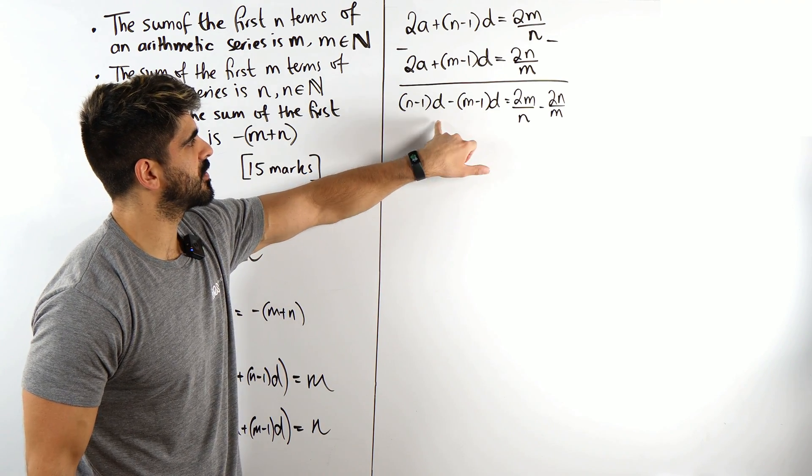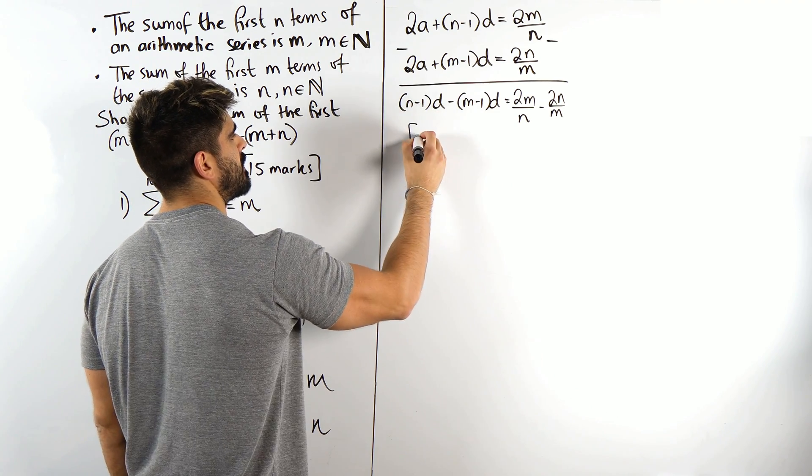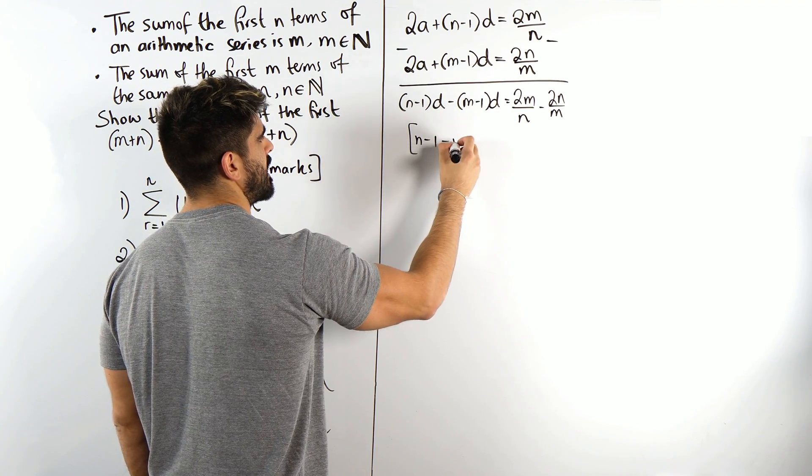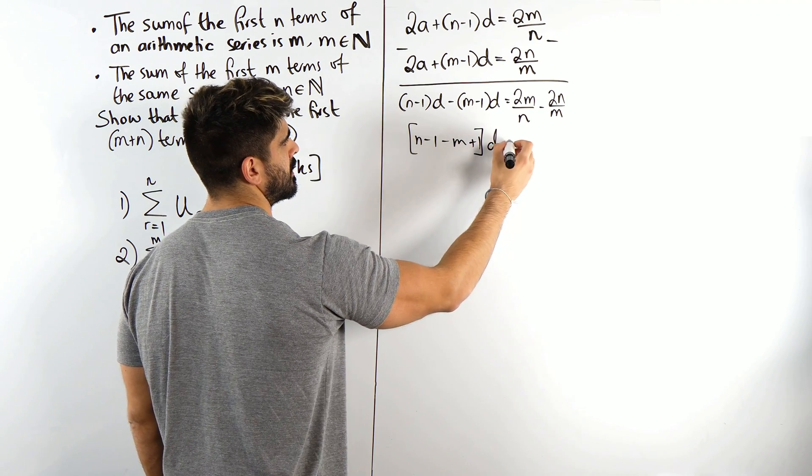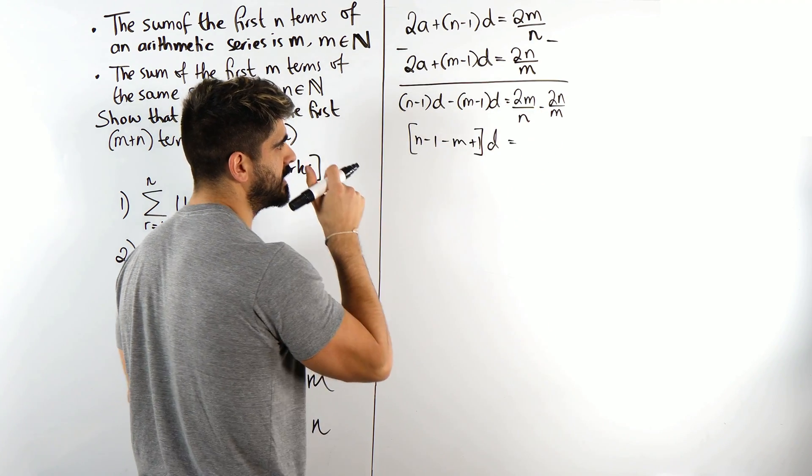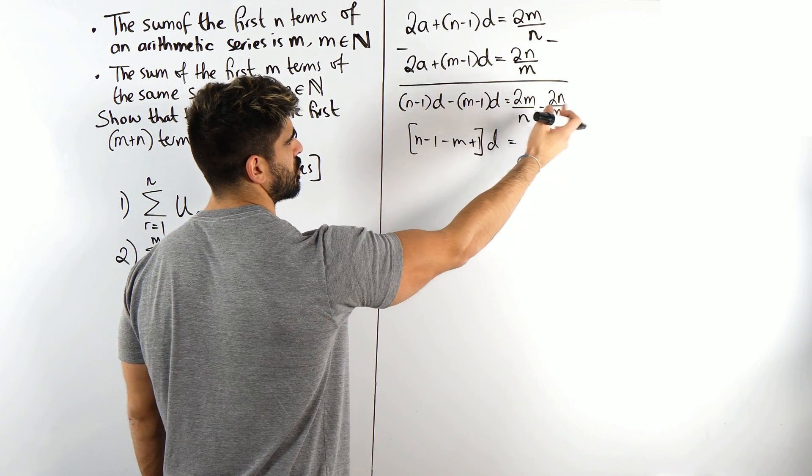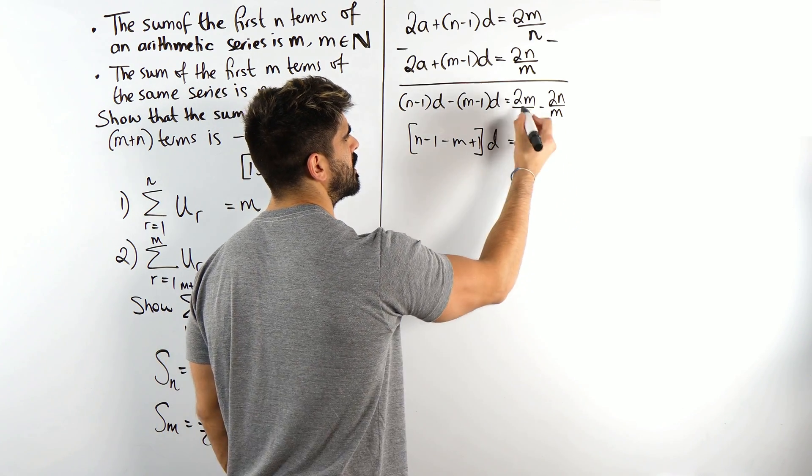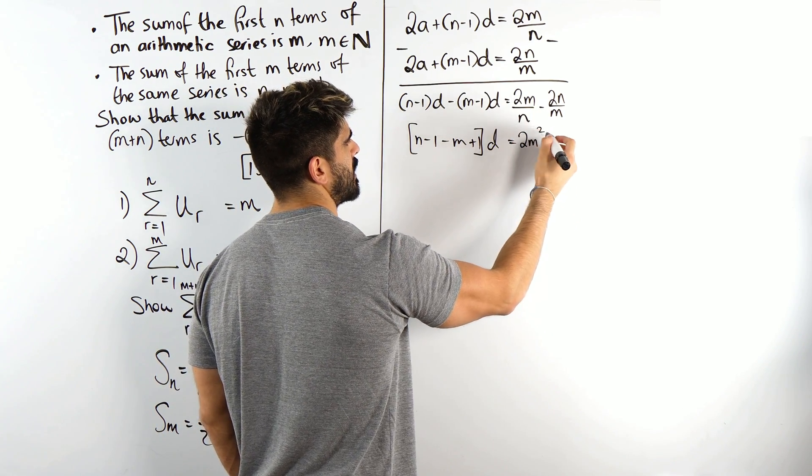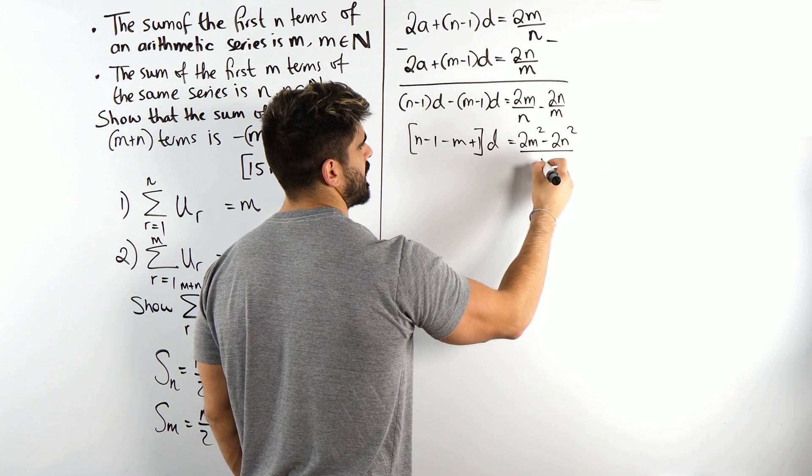Anyway, simplifying this, I mean you could expand everything. I'd rather factorize out d. We'd have n minus 1 subtract m plus 1 times d. And then here I guess I feel like I'm going to do a division, so I might just cross multiply and bring it together. Maybe some things will cancel. So I get 2m squared minus 2n squared over nm.